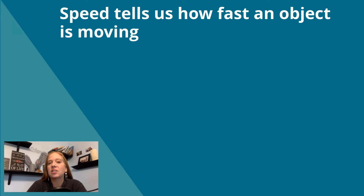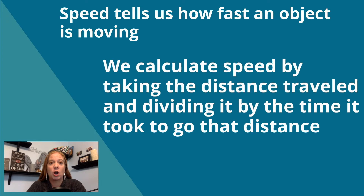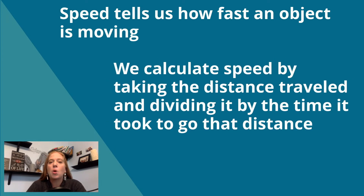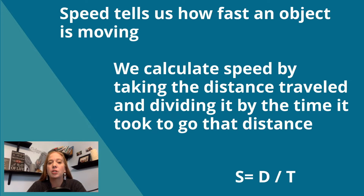Speed tells us how fast an object is moving. We calculate speed by taking the distance traveled and dividing it by the time it took to go that distance. S equals D over T.